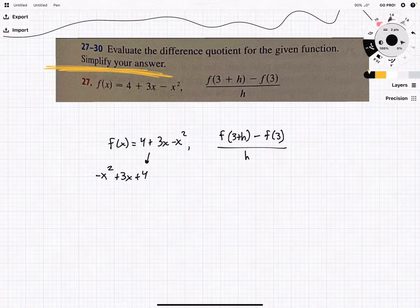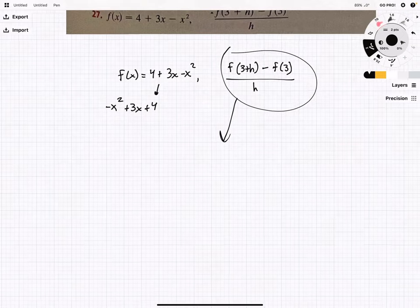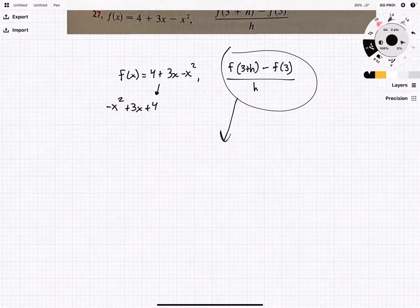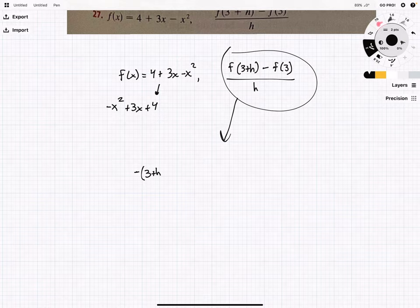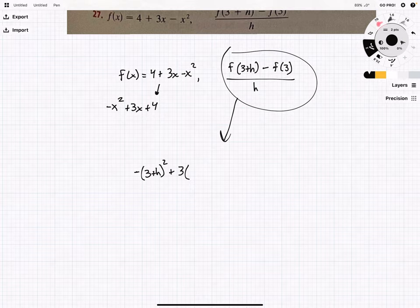We'll take this here, and we will do negative 3 plus h squared plus 3 times 3 plus h plus 4.